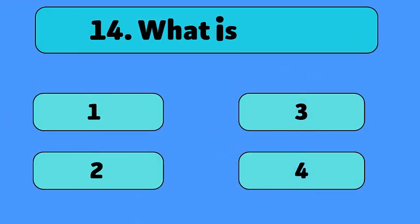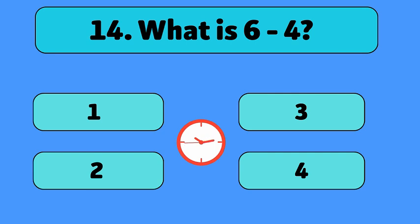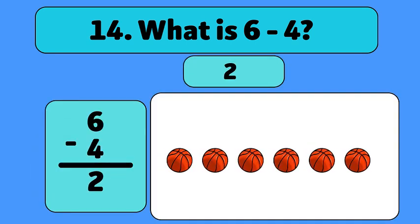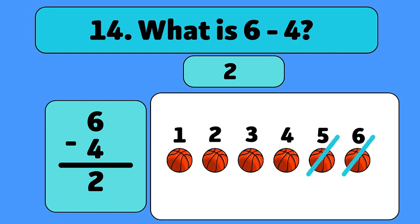What is 6 minus 4? The answer is 2. We start with 6 cakes and take away 4. Let's count: 1, 2, 3, 4. We have 2 basketballs now.